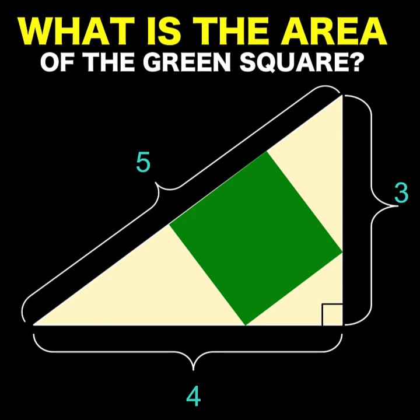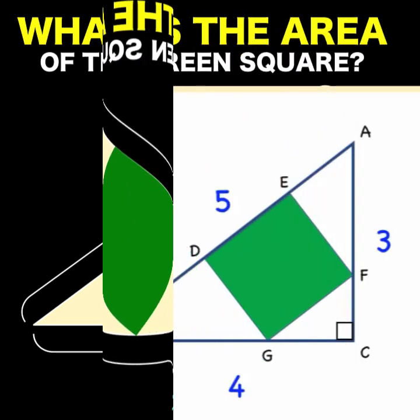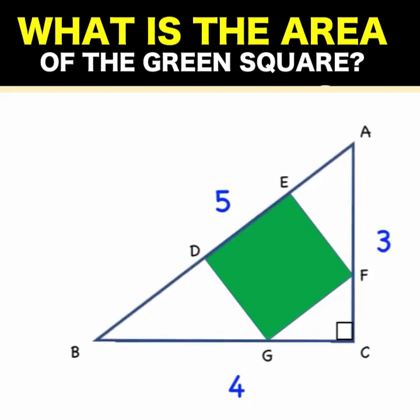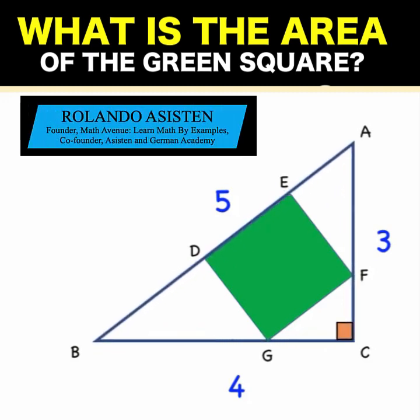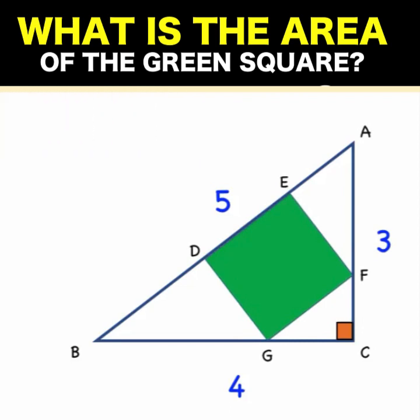Hi everyone, here is our math problem for today. We are given this 3x4x5 right triangle and this green square that is inscribed in our triangle. We would like to find what is the area of the green square.